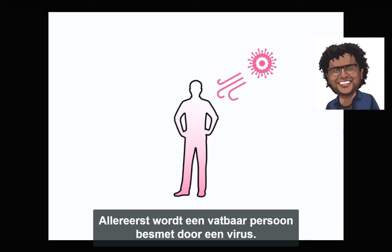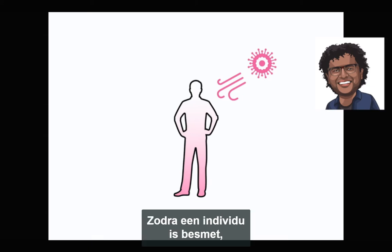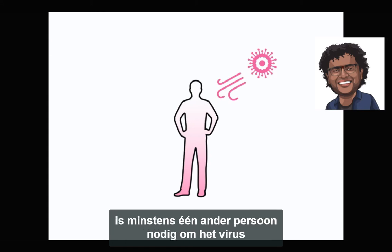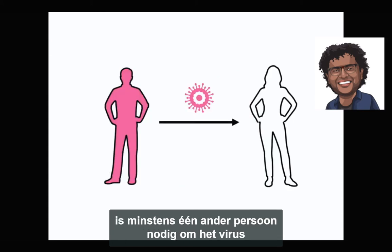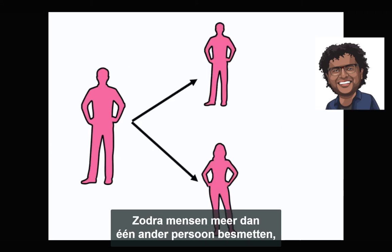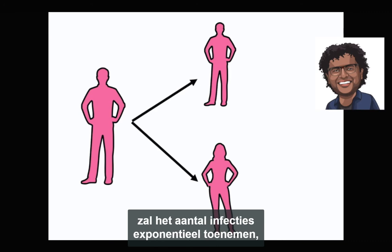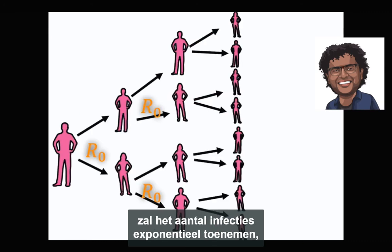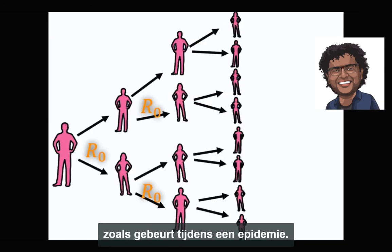First, a susceptible individual gets infected by a virus. Once an individual is infected, it needs at least one other person for the virus to spread in the population. Once individuals infect more than one individual, then the number of infections will increase exponentially, as happens during an epidemic.